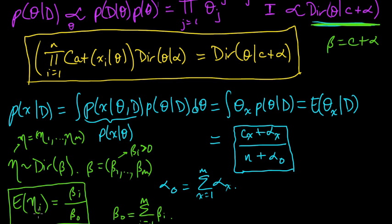then the expected value of the x-th coordinate is beta x over beta 0, which is just this right here. cx plus alpha x over the sum of the betas, in this case, is n plus alpha 0, where alpha 0 is this sum.